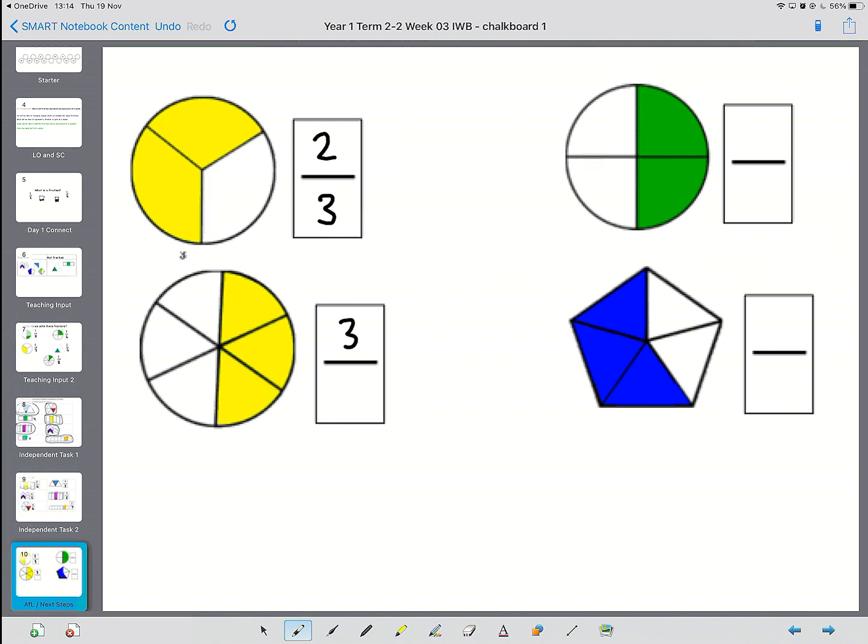So this is three parts out of six. This is two parts out of four. And this is three parts out of five. And that is the two different ways you can write fractions. And that is the end of today's maths lesson.